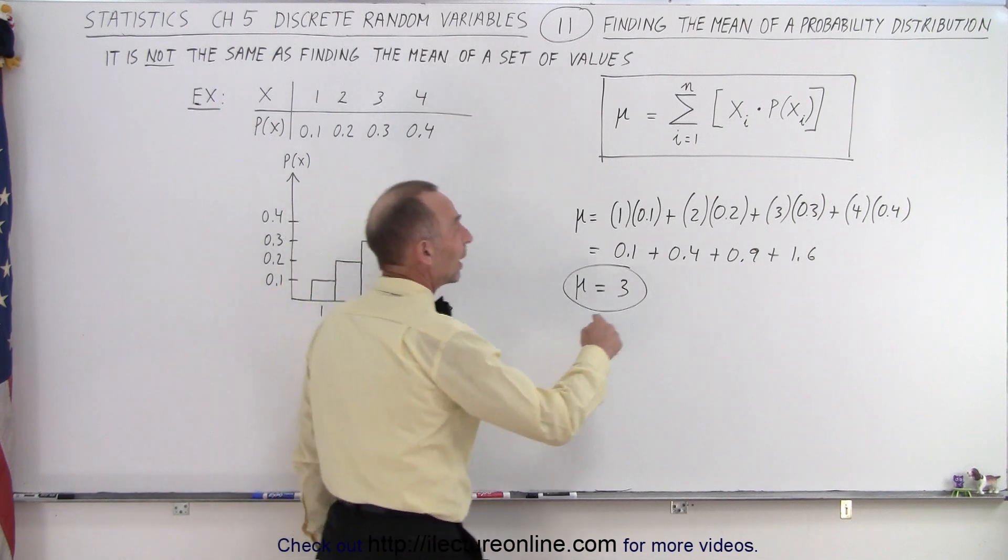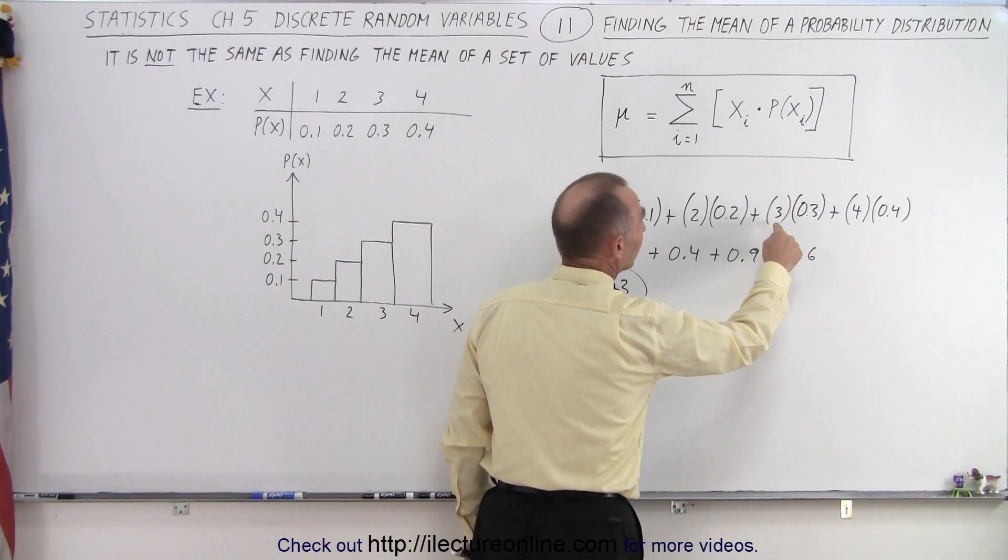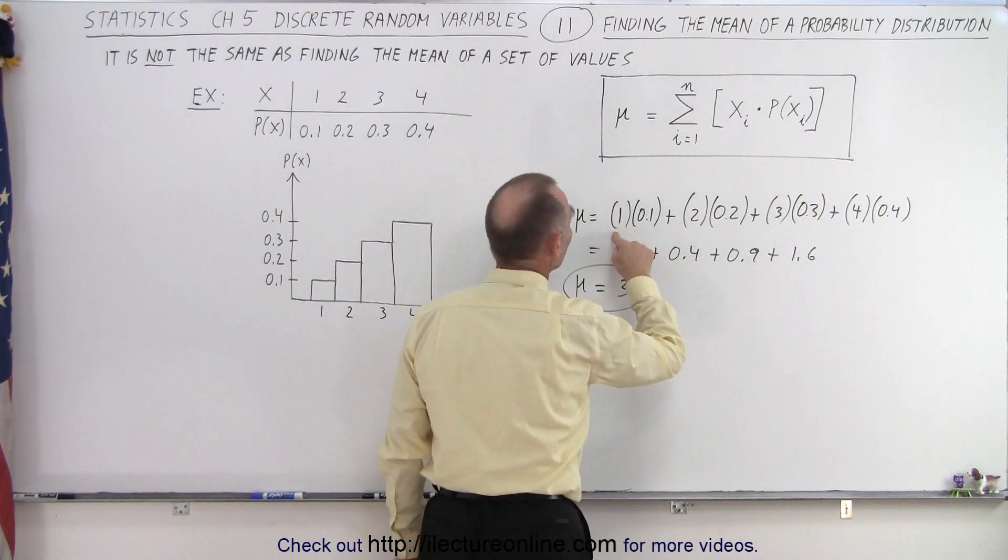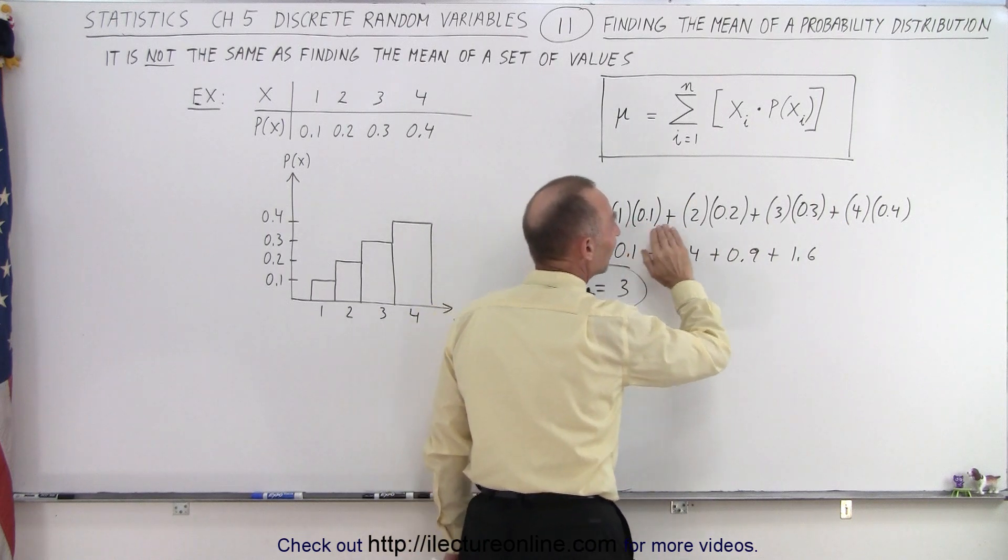There's a much greater likelihood that x will be 3 or 4 versus 1 or 2. So they're more heavily weighted.